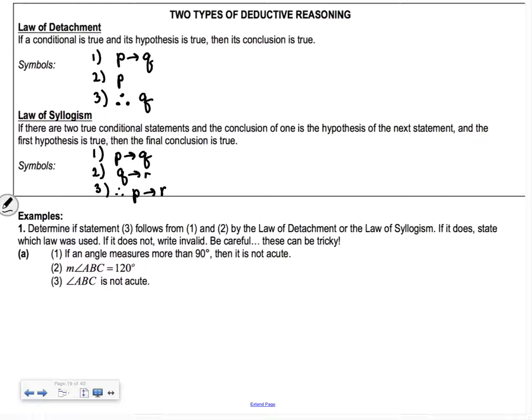Determine if the statement three follows from one or two by the law of detachment or syllogism. These can be tricky. We want to write it out with symbols. If an angle measures more than 90, then it is not acute, so P implies Q. Measure of angle ABC is 120, so that's more than 90, so P happened. Therefore, it is not acute. This is detachment, and it is valid.